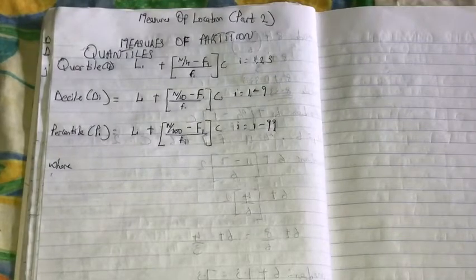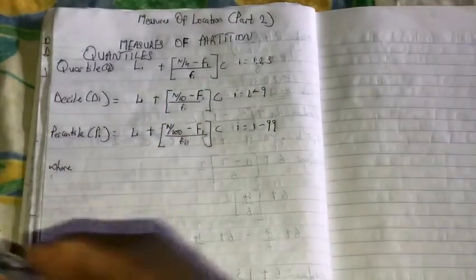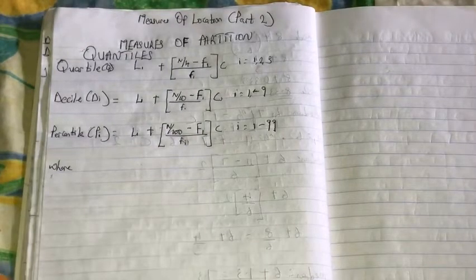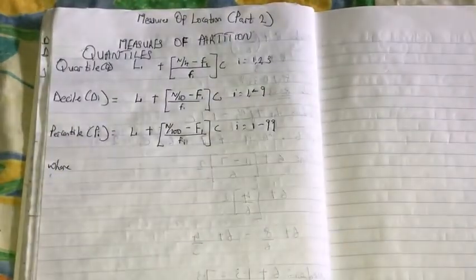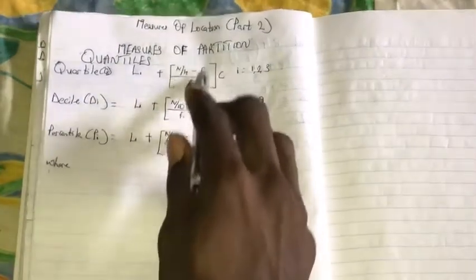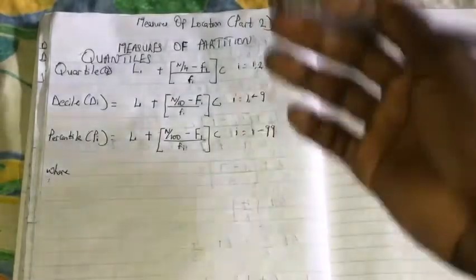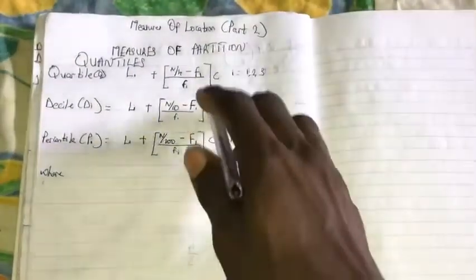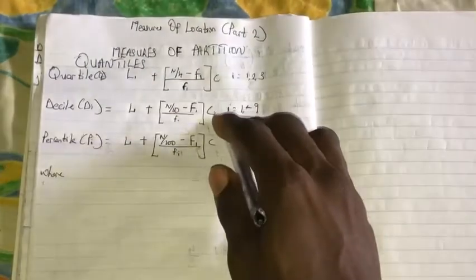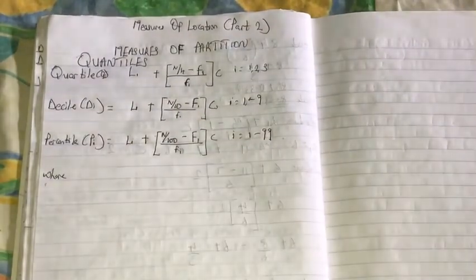The formula to compute the quantiles is where Li represents the lower class boundary of the quantile class. The small f represents the frequency of the quantile class, similar to that of our median. The big F represents the summation of the frequency of all the classes lower than the quantile class, also the cumulative frequencies before the quantile class. Then c represents the class size of the quantile class, and n represents the total number of items in the distribution.